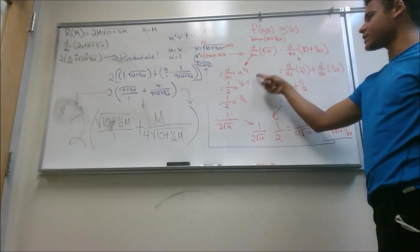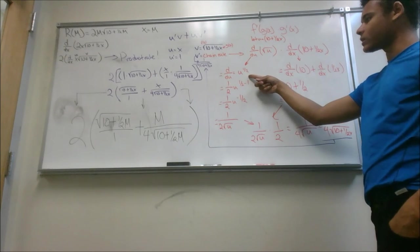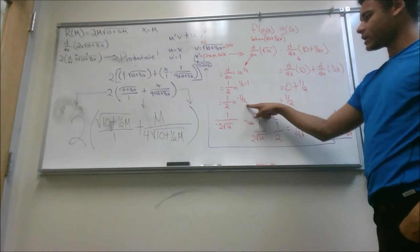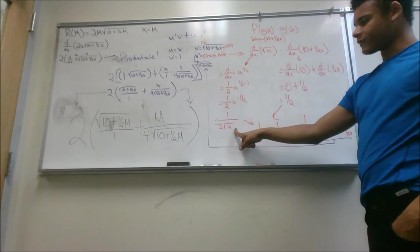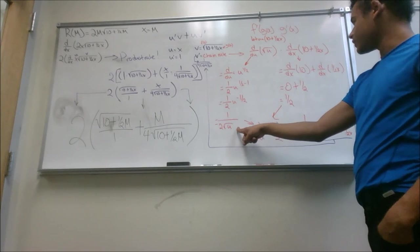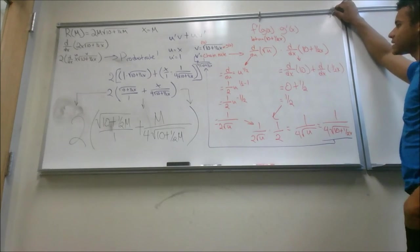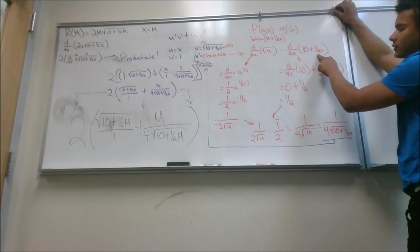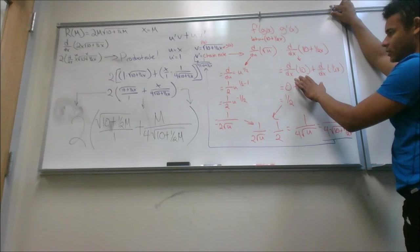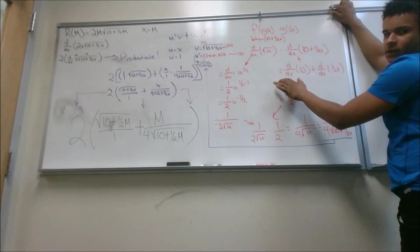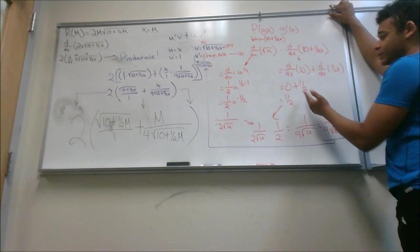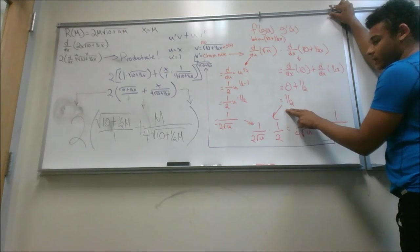So we'll make the transformation, make that U to the 1 half. We'll do our power rule and end up with the final answer of 1 over 2 square root U. Over on this side, we have D over DX of 10 plus 1 half X. We can split this up with the additive derivative property. It will be D over DX of 10 plus D over DX of 1 half X, which is 0 plus 1 half. That'll equal 1 half.